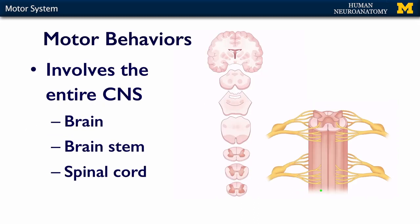Motor behaviors, or motor actions — an action or behavior involves your entire CNS. It starts in the brain, in the premotor cortex, to motor cortex, it travels through the brain stem, all the way down to the spinal cord, and then exits from the spinal cord ventral horn through the ventral roots to the spinal nerves.